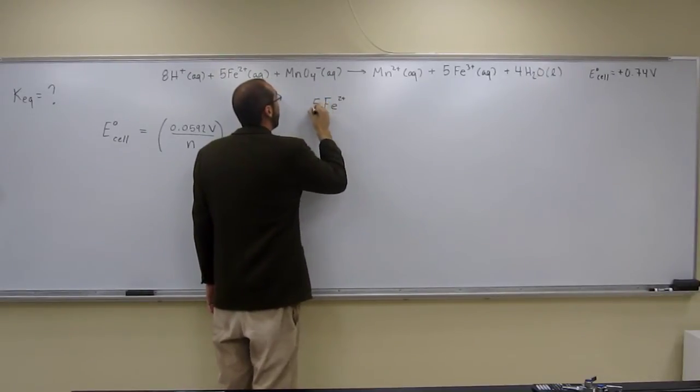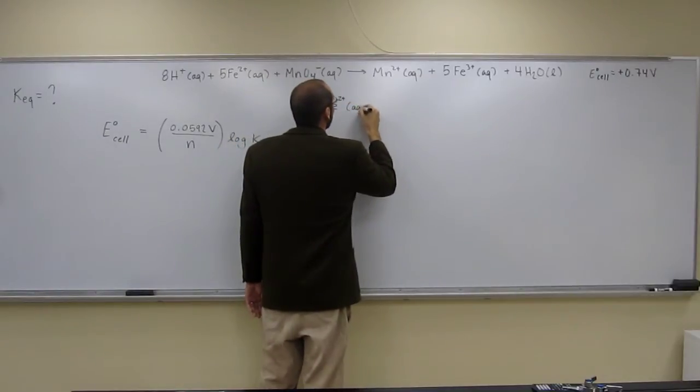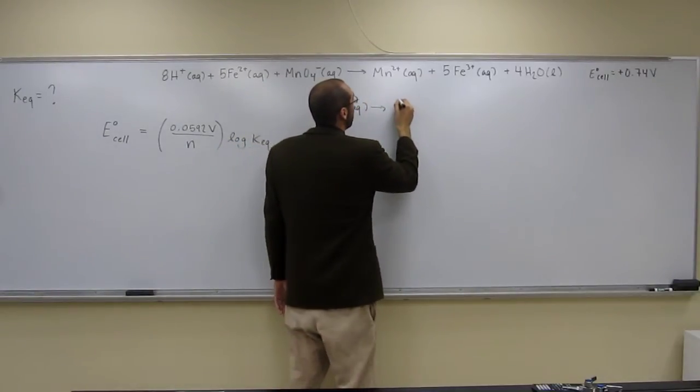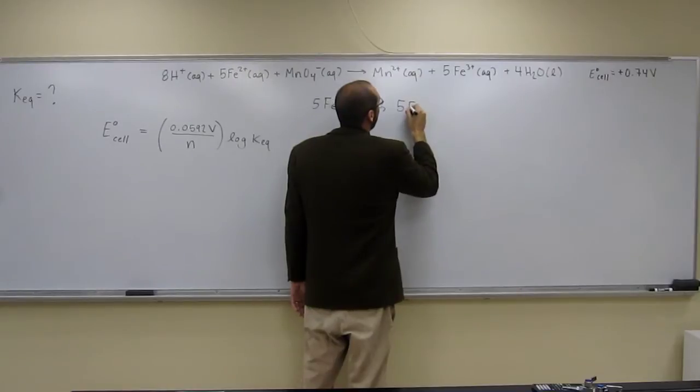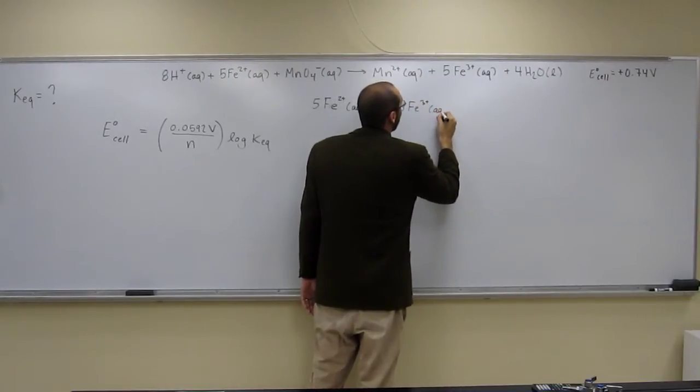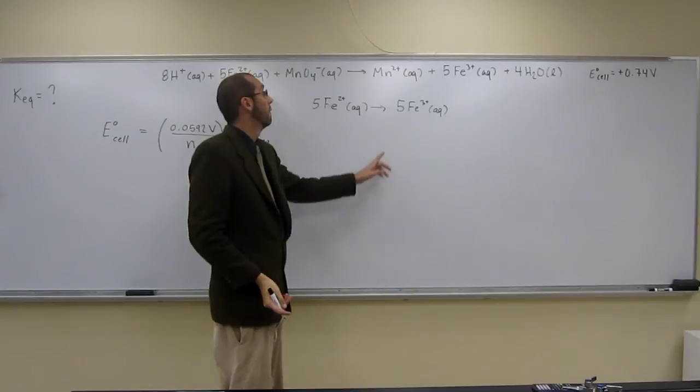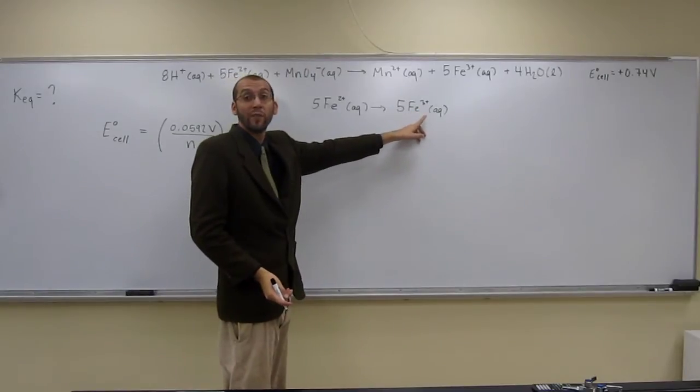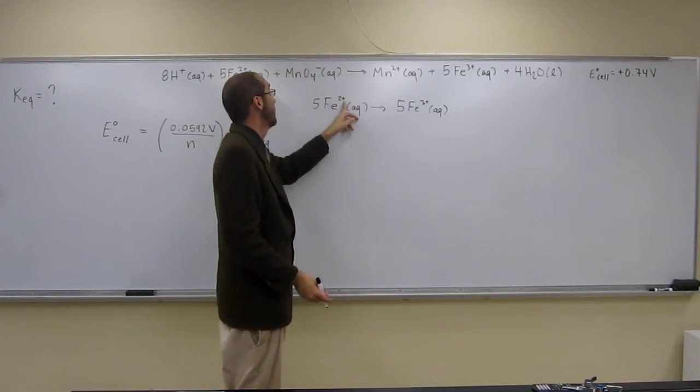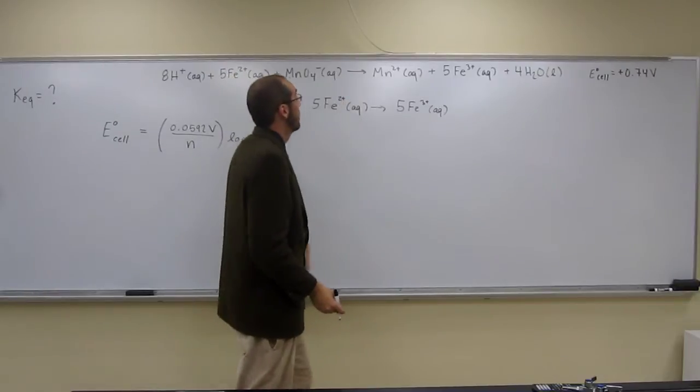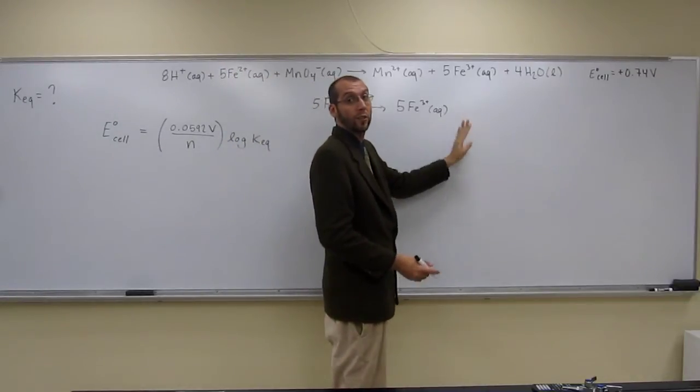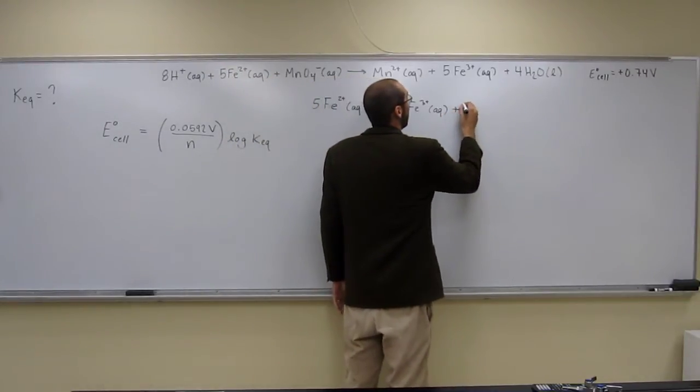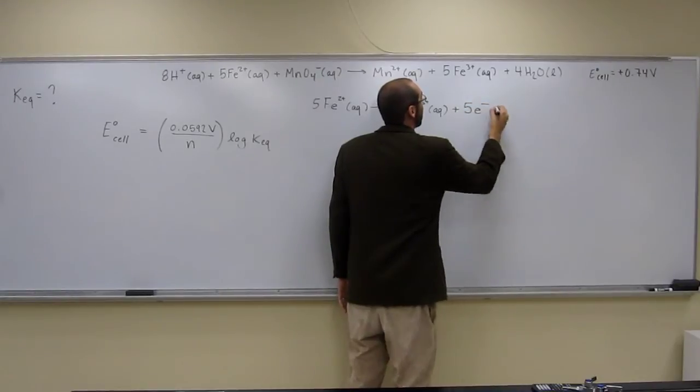5 Fe 2 plus aqueous goes to 5 Fe 3 plus aqueous. So, 5 times 3, that's 15. 5 times 2, that's 10. So, what do we need? We need 5 electrons here. So, plus 5 electrons, like that.